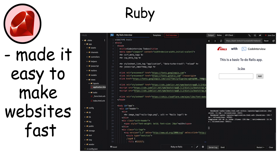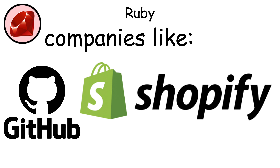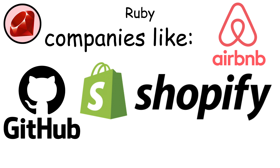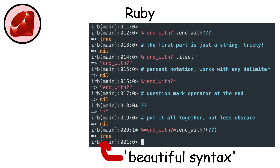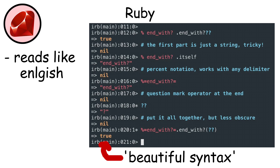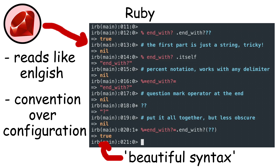Rails made it incredibly easy to create websites quickly, which is why companies like GitHub, Shopify, Airbnb, and Basecamp were all built with Ruby on Rails. Ruby has a beautiful syntax that reads almost like English, and it emphasizes convention over configuration, which means you spend less time on setup and more time writing actual code.